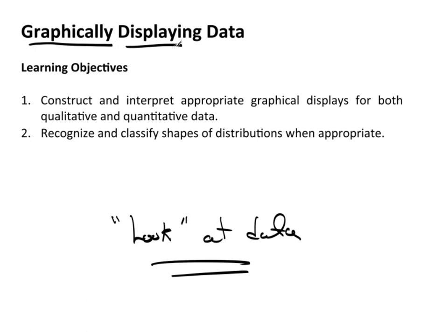Now, there are two major learning objectives that we need to talk about here. The first thing is we want to be able to construct and interpret appropriate graphical displays for both qualitative and quantitative data. There's a slight difference in how this is done. And we want to be able to recognize and classify shapes of data. Shapes of distributions is extremely important. Based on the shapes of distributions later, that will help direct us to the type of analytical approach that we actually need to follow.